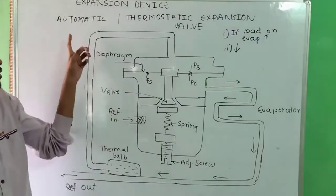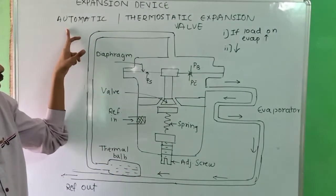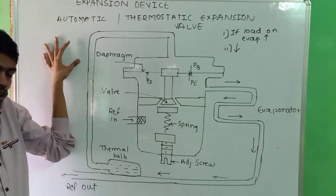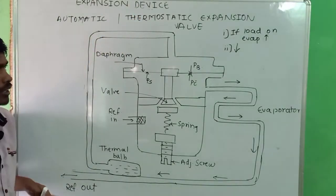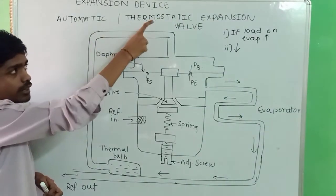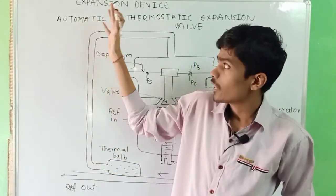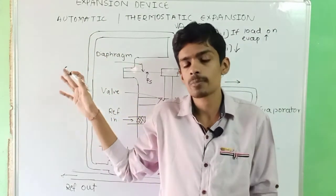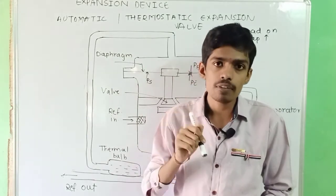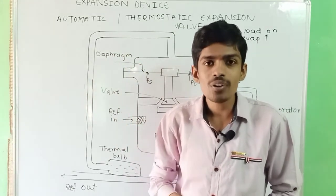In comparison: the Automatic Expansion Valve depends upon pressure, while the Thermostatic Expansion Valve depends upon the degree of superheat. In the automatic type, efficiency is high and friction losses are less, but it is complex in construction. The thermostatic type has lower efficiency and more friction losses, but is simple in construction and mostly used, while automatic expansion valves are rarely used. We have seen three types of expansion devices: capillary tube, automatic expansion device, and thermostatic expansion device.